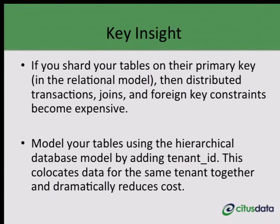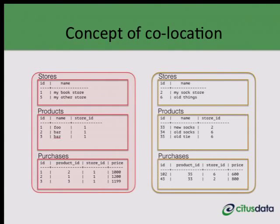The key benefit of the hierarchical database model is that it enforces data co-location. In its simplest form, you add a customer ID or tenant ID column to your tables and shard those tables on customer ID. This ensures that data from the same customer gets co-located together. Co-location dramatically reduces the costs associated with distributed transactions, joins, and constraints, and also simplifies handling network and machine failures. In the diagram, we have three tables — stores, products, and purchases — all distributed on the store ID, so all data belonging to a particular store is co-located on the same machine.